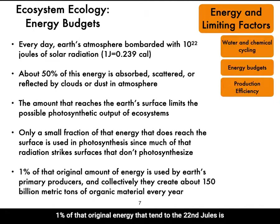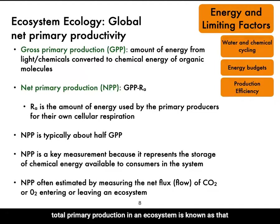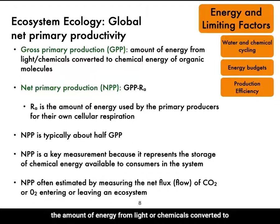As a result, only 1% of that original energy — the 10 to the 22nd joules — is actually used by Earth's primary producers, which collectively create about 150 billion metric tons of organic material every year. Total primary production in an ecosystem is known as that ecosystem's gross primary production, GPP, and is defined as the amount of energy from light or chemicals converted to chemical energy of organic molecules.